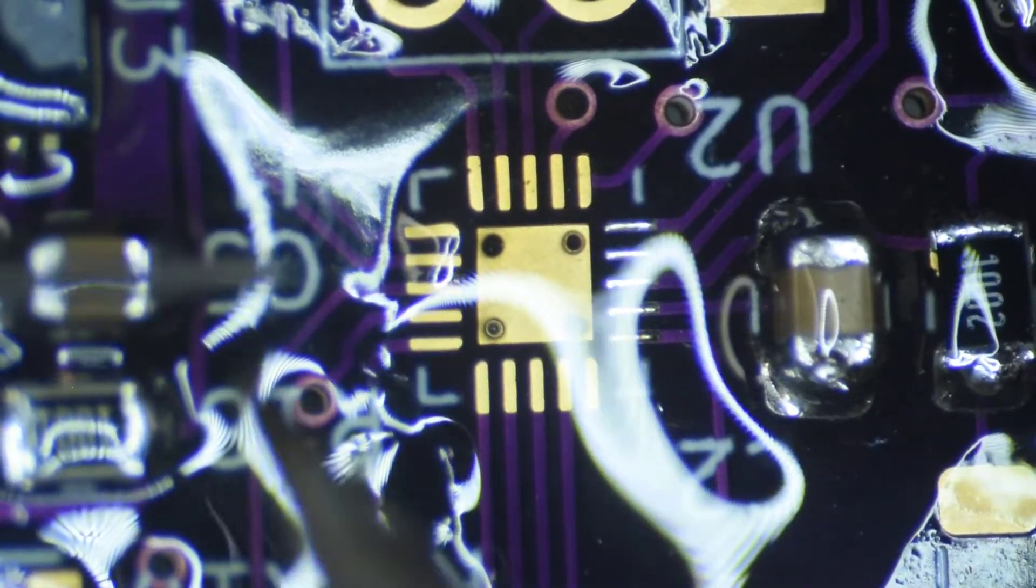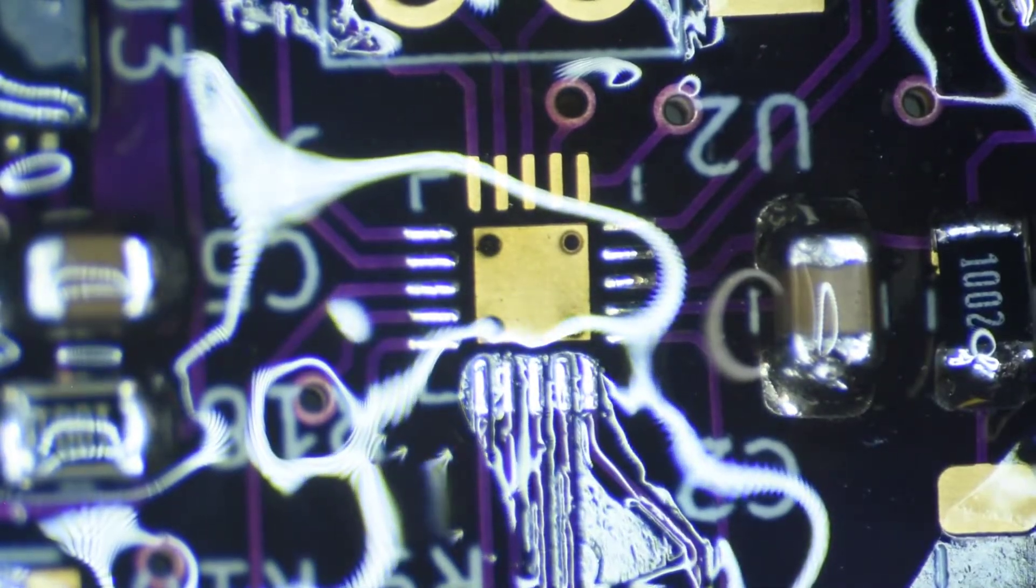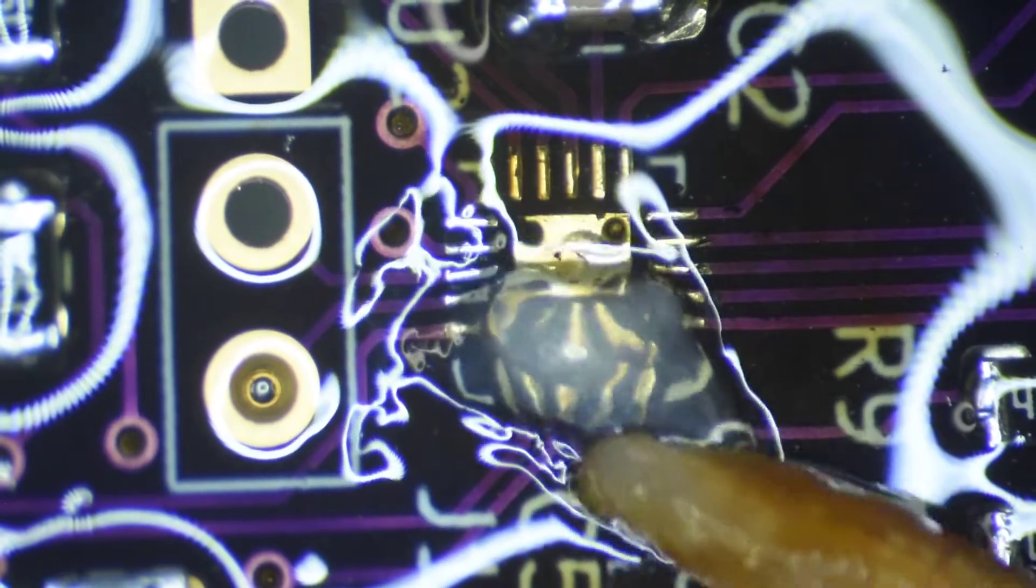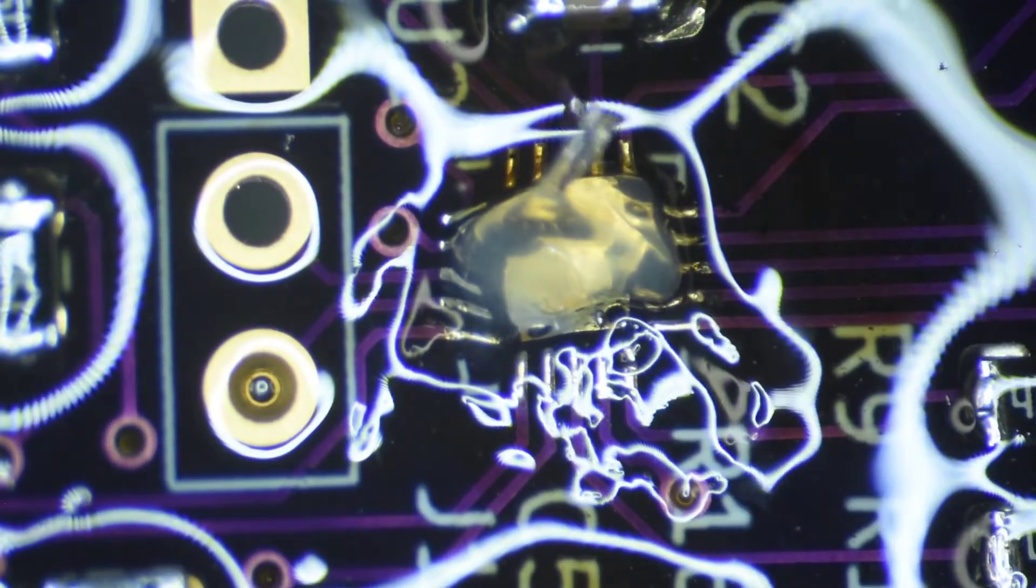The thinner lead pads on the QFN are more difficult to get a good bead of solder on. One reason may be that I have the temperature of the soldering iron up too high. I think if I could keep more flux around while putting solder on the pads, it will go on smoother. And I'm leaving just too much solder on the thermal pad. I'm really going to have to work on that.